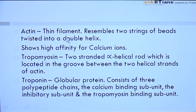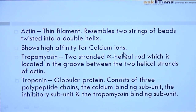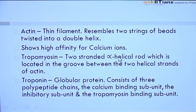Actin forms the thin filament. It resembles two strings of beads which are twisted into a double helix. Actin shows high affinity for calcium ions, and this affinity helps in muscle contraction. Tropomyosin is also a type of protein which is a two-stranded alpha helical rod. It is located in the groove between the two helical strands of actin.